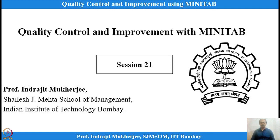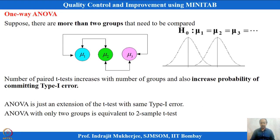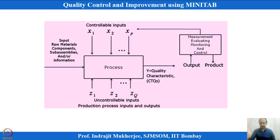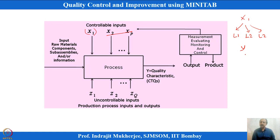In the last session, we discussed analysis of variance and why we use it. There is one factor X1, and we want to check whether at different conditions of X1 the mean response is changing or not. The average population response can be thought of as mu1, mu2, and mu3.